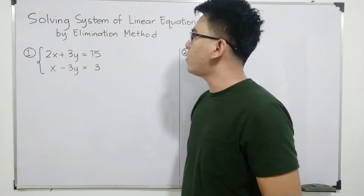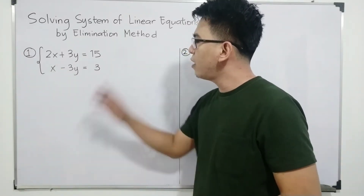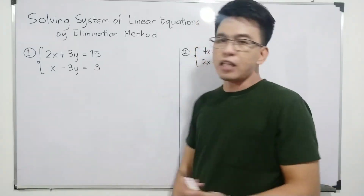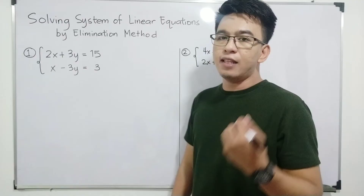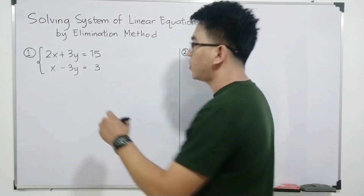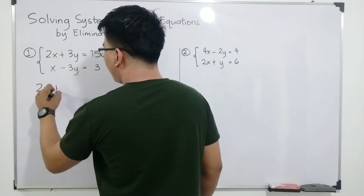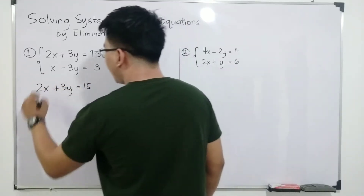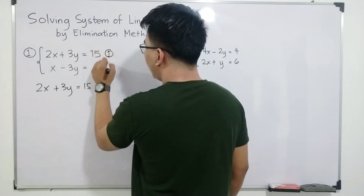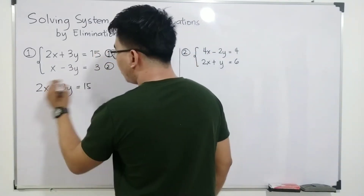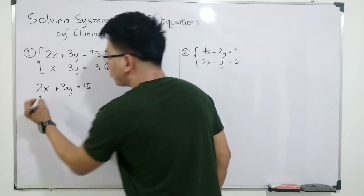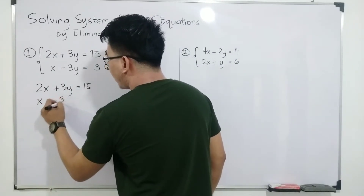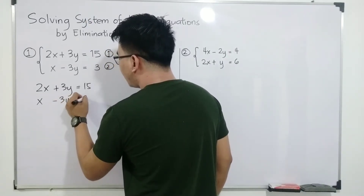Let's start with the first example. We have 2x plus 3y is equal to 15 — that is equation number 1 — and x minus 3y is equal to 3, which is equation number 2. We are going to add the two equations.